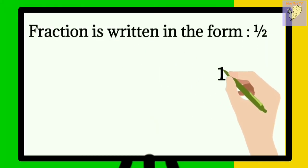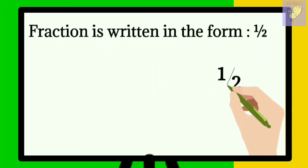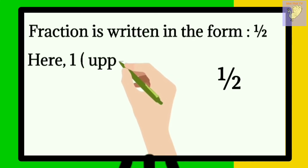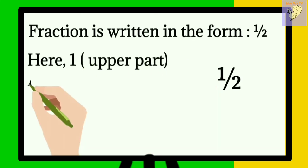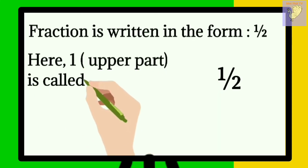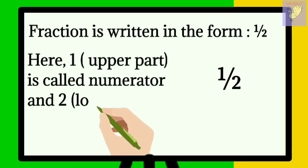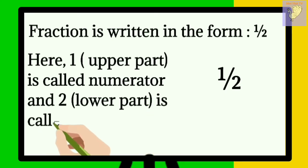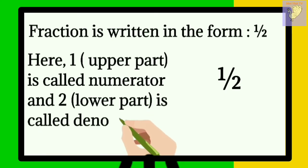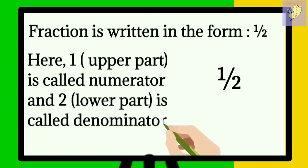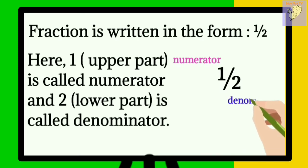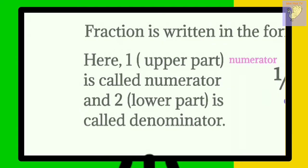A fraction is written in this form. Here the upper part, that is 1, is called the numerator, and the lower part, that is 2, is called the denominator. Here you can clearly see the numerator and denominator.